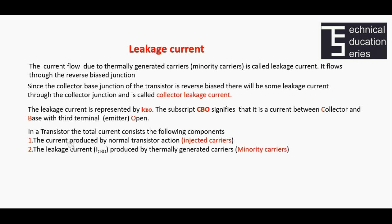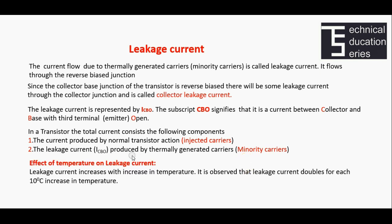In a transistor, the total current consists of two components: first, the current produced by the normal transistor action due to injected carriers from the emitter; and second, the leakage current ICBO produced by thermally generated minority carriers. The effect of temperature on leakage current is that it increases with increase in temperature. It is observed that leakage current doubles for each 10-degree rise in temperature.